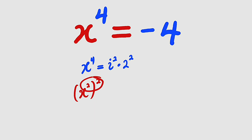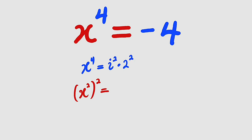If you simplify this, you obtain x to the power of 4. Because we have common exponents, we can multiply the bases: i times 2 is 2i, then you raise them to the power of 2.